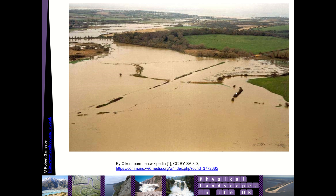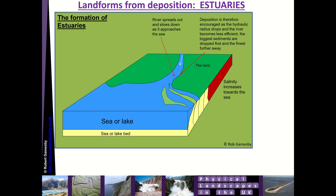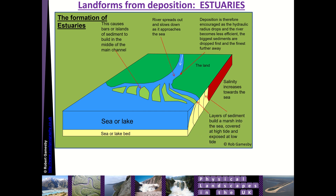Estuaries are another depositional feature and they occur at the mouth of the river. As the river approaches the sea it slows down and salinity increases. Because the river slows down, deposition increases — the river becomes less efficient, bigger sediments are dropped first and finer ones further away. This builds up sediment and land out to sea, and possibly islands as well. Those islands in the middle of the channel are known as bars, and finer sediment can build up a marsh out to sea in various beds of sediment.